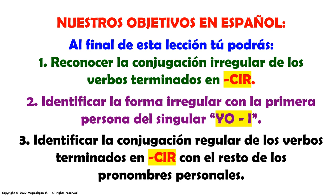Nuestros objetivos en español. Al final de esta lección, tú podrás: uno, reconocer la conjugación irregular de los verbos terminados en CIR; dos, identificar la forma irregular con la primera persona del singular, yo (I); tres, identificar la conjugación regular de los verbos terminados en CIR con el resto de los pronombres personales.